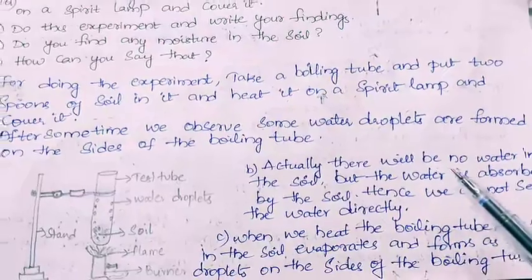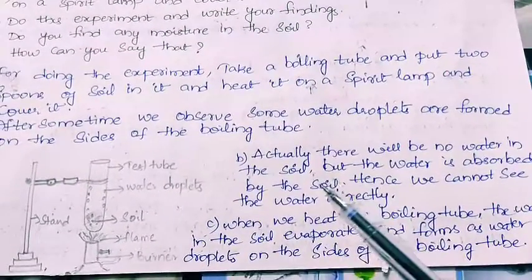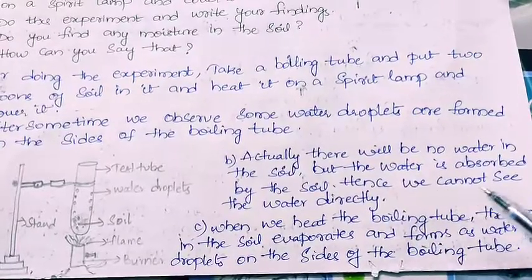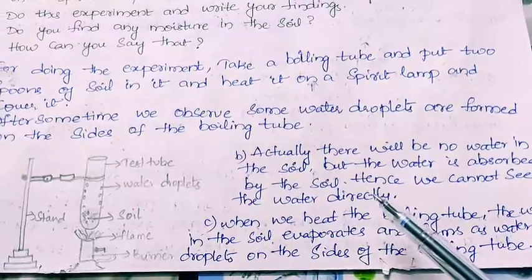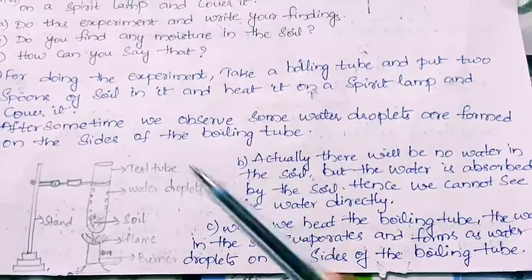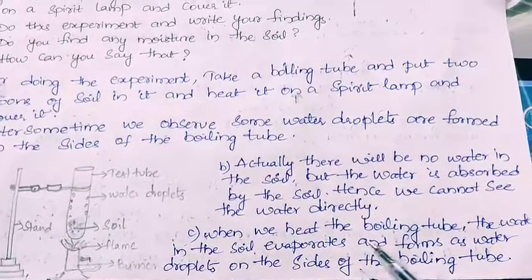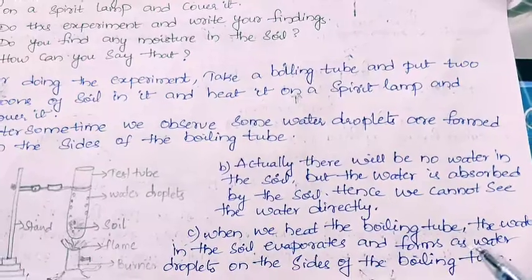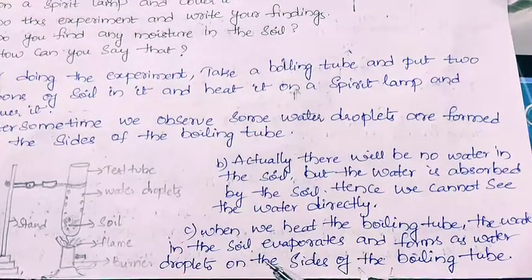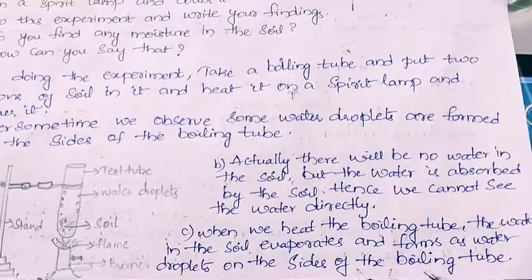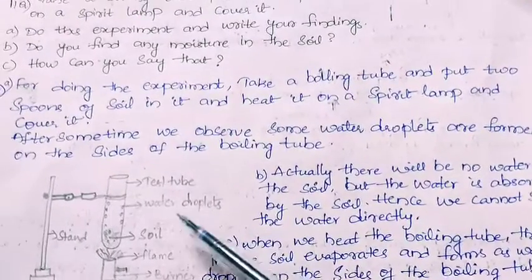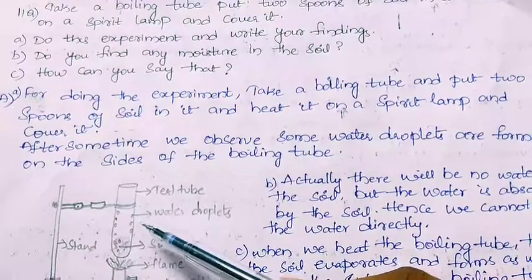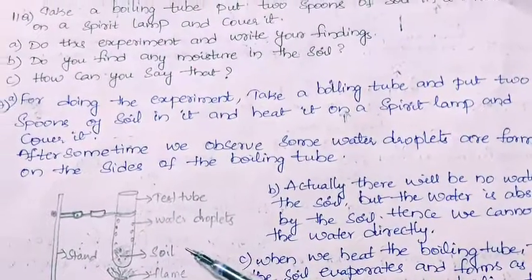Actually there is water absorbed by the soil, so we cannot see it directly. When we heat the boiling tube, the water in the soil evaporates and forms as water droplets on the sides of the boiling tube. You can see the water droplets on the sides of the boiling tube, hence we can say that the soil has moisture.